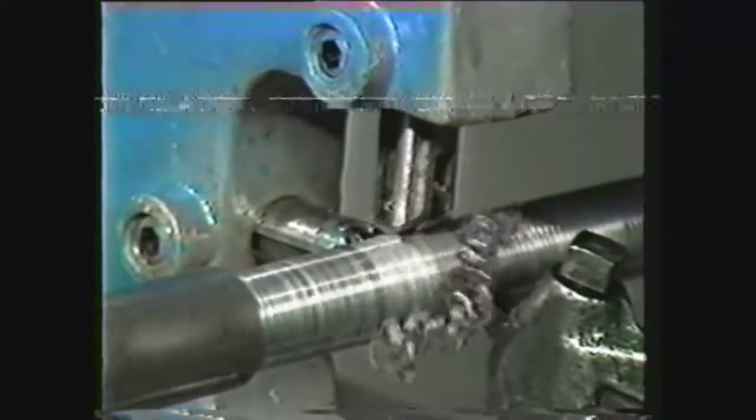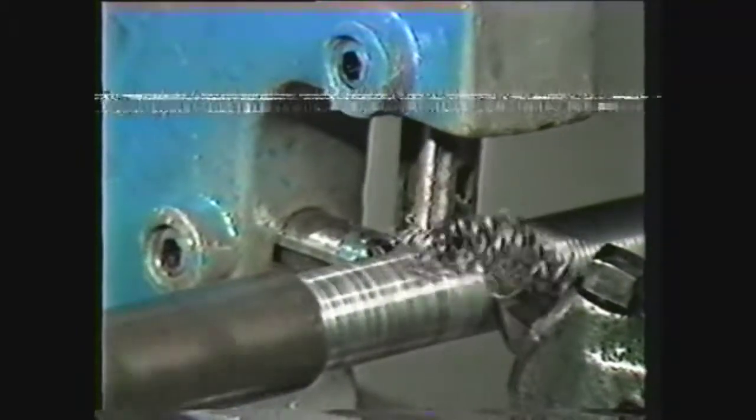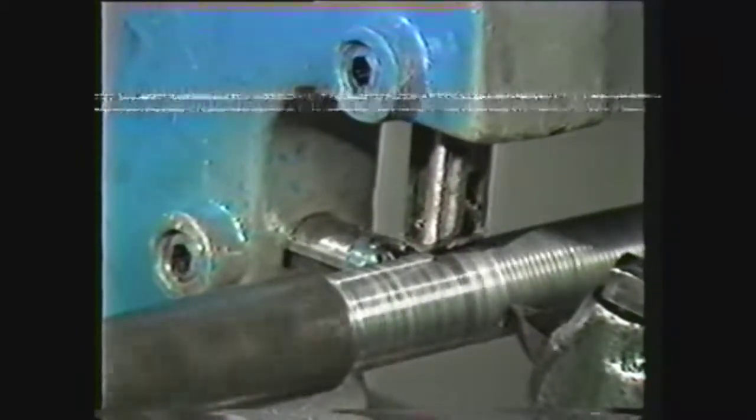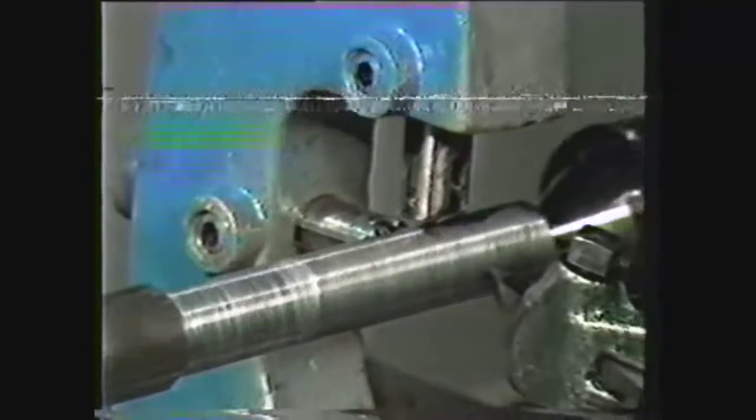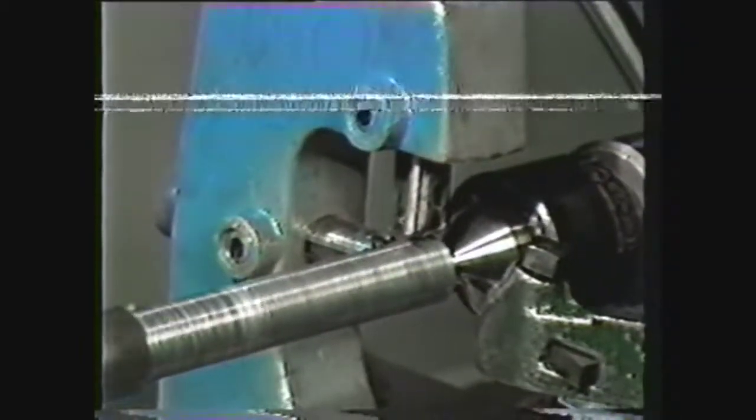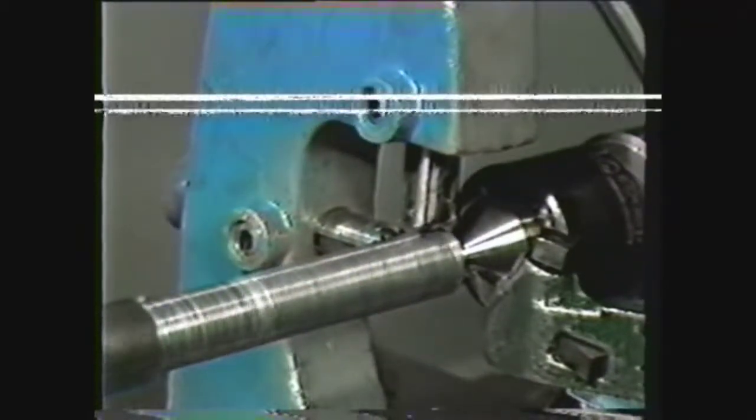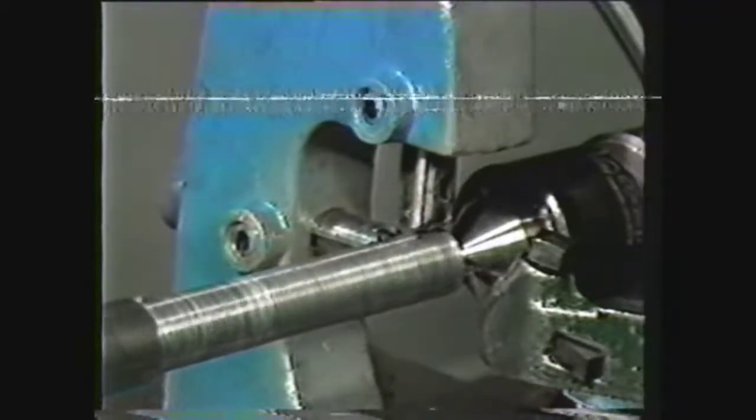When using the follower rest in threading, one adjustment of the jaws is sufficient since each pass merely cuts threads into the work and does not change the outer diameter of the workpiece. After each threading pass, make sure that the threads do not have burrs on them, which could damage the jaws of the follower rest.